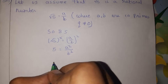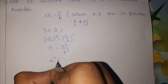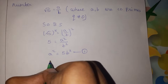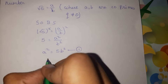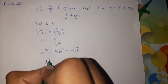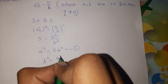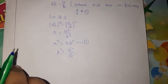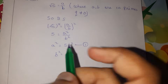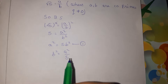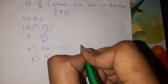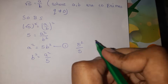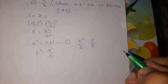So b square multiplied gives a square is equal to 5 b square. Therefore a square is divisible by 5. For example, if 5 square is divisible by 5, then a square is divisible by 5.